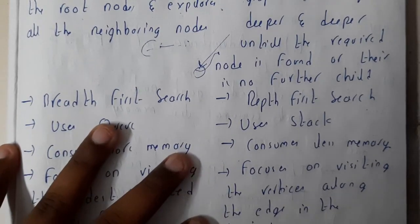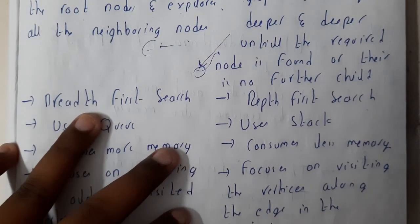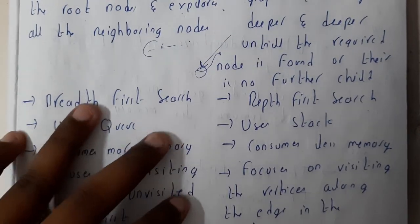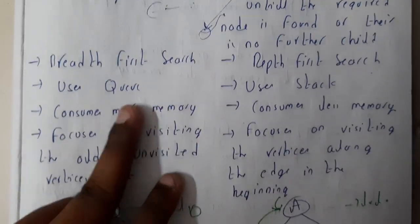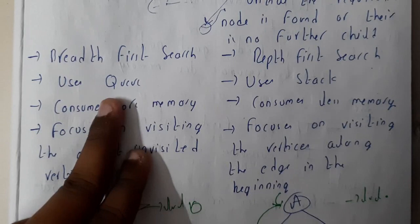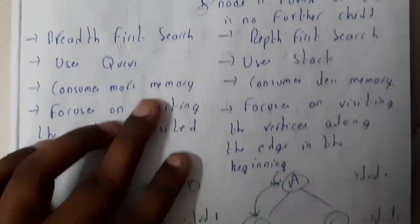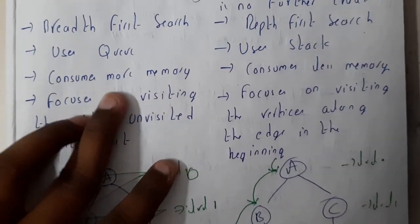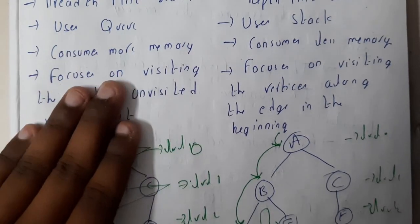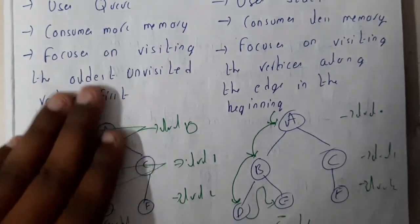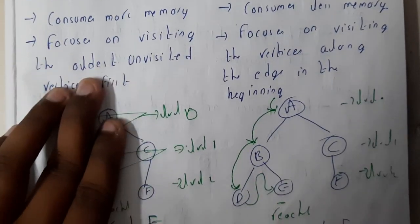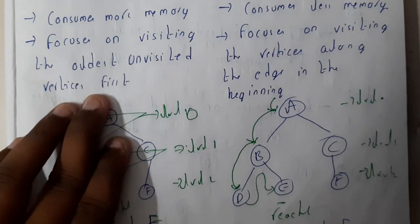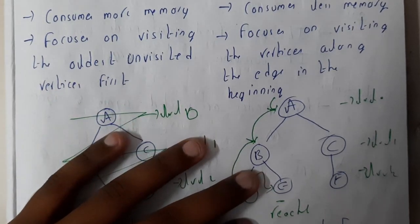BFS stands for breadth first search and DFS stands for depth first search. In BFS we use a queue, whereas in DFS we use a stack. BFS consumes more memory compared to DFS. BFS focuses on visiting the oldest unvisited vertices, whereas in DFS there is repetition of vertices.